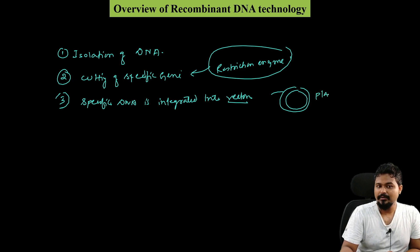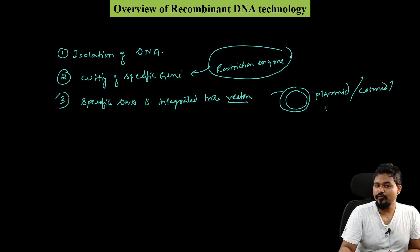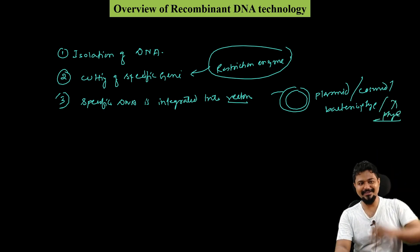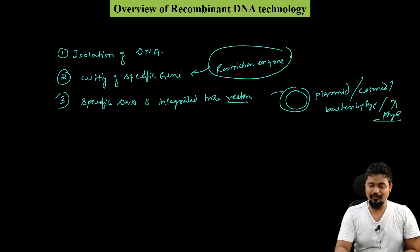The types of vectors include plasmid, cosmid, bacteriophage, and lambda phage. I will discuss the details of each vector type in a separate class.